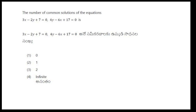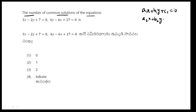We will look at the number of common solutions for linear equations. Given two equations: A1x plus B1y plus C1 equals 0, and A2x plus B2y plus C2 equals 0. To find the number of solutions, we check the condition using the ratios A1 by A2, B1 by B2, and C1 by C2.